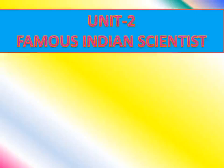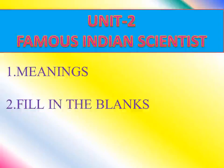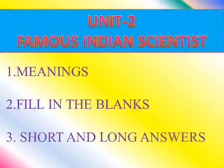Dear children, we have completed Unit 1 — The World Around Us and Fading Glory of the Earth. You have to learn perfectly all the meanings, fill in the blanks, and question answers from Unit 1. Let us continue with Unit 2, which is Famous Indian Scientists. We are going to discuss all the meanings, fill in the blanks, and short and long answers.